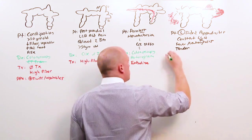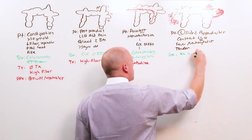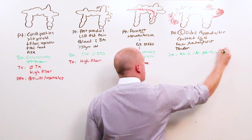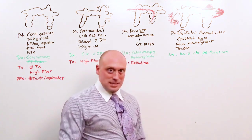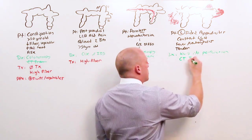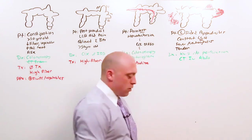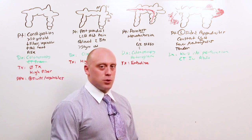The first thing you could do is get an upright KUB to rule out perforation. You see free air under the diaphragm, they go to surgery. But the way you diagnose diverticulitis is with a CT scan of the abdomen, CT with IV contrast. That's going to allow you to grade the severity, and how severe it is helps you determine how you treat them.